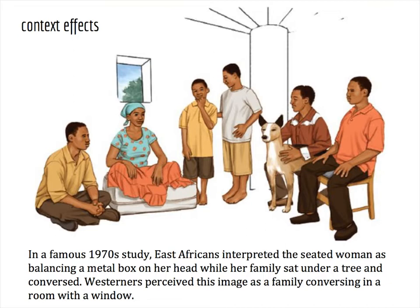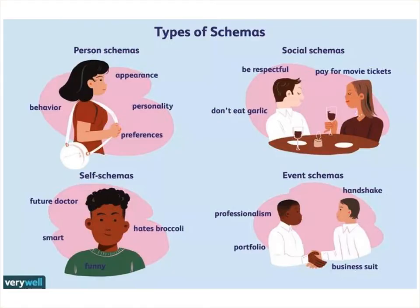Study this picture for a while, and make sure you read the caption. Context effects, including where you're from, help determine how we interpret and perceive various stimuli. Our perceptual set and context effects work because our brains tend to organize and interpret information based on cognitive frameworks called schema.